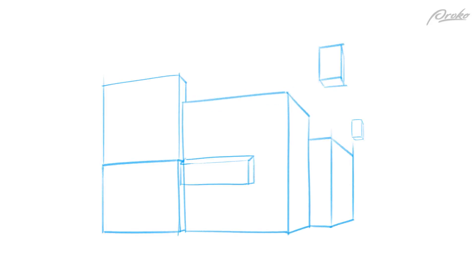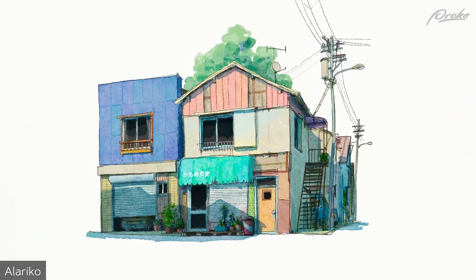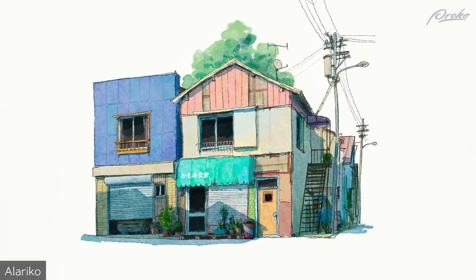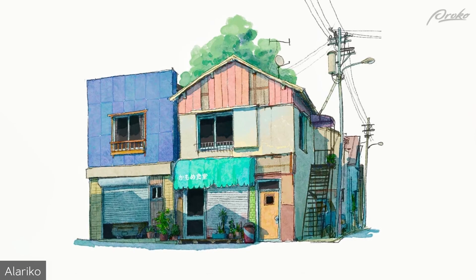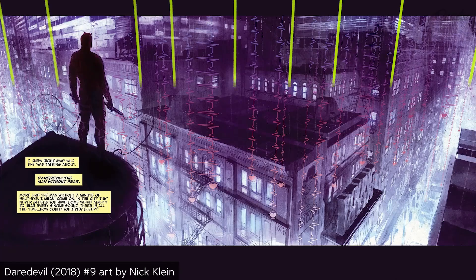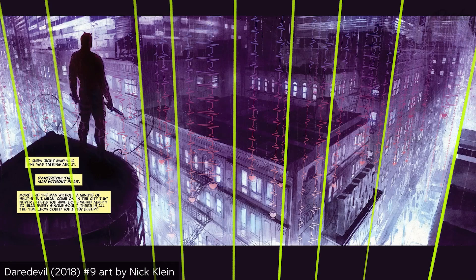Two-point perspective is the most commonly used perspective system. It gives us the freedom to walk around and look around our scene while also simplifying the vertical y-axis to parallel lines. The only time we really need to add a third point is if we're drawing an extreme up or down angle — like looking down at a city. But this doesn't happen very often, so we can usually get away with the parallel verticals.